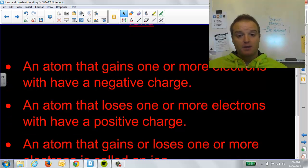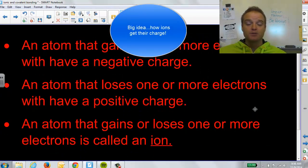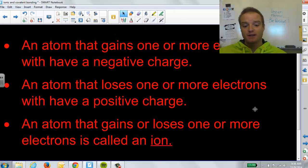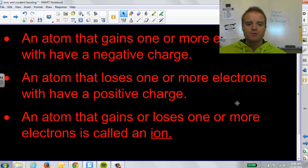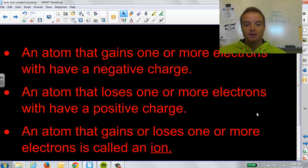So, ions. What are ions? An ion happens when an atom that gains one or more electrons will have a negative charge. So, an ion being positively charged or negatively charged depends on whether it gains or loses an electron. If you gain electrons, you're going to have a negative charge. You gain electrons, you gain negative charges. Now, the overall charge on the atom or ion is negative. On the opposite side of that, an atom that loses one or more electrons will have a positive charge. Because now you have more positives than negatives. The overall term for atoms that gain or lose electrons is called an ion. They have a charge.